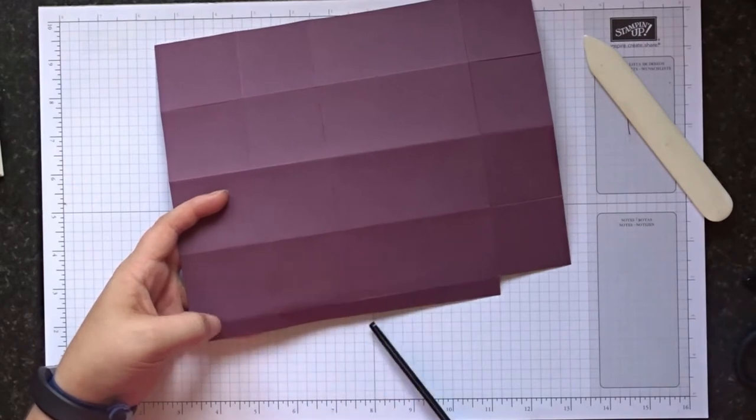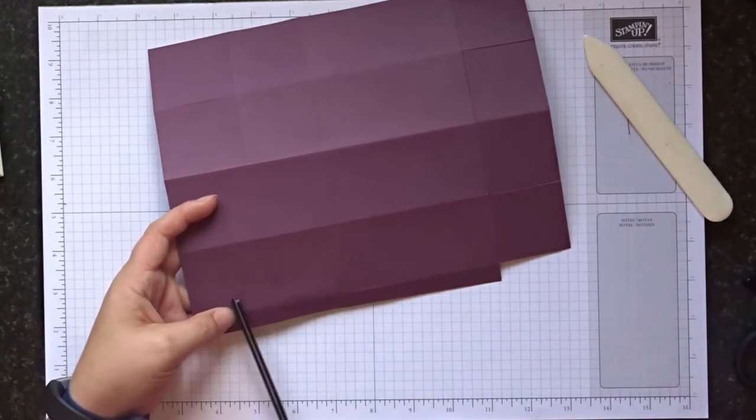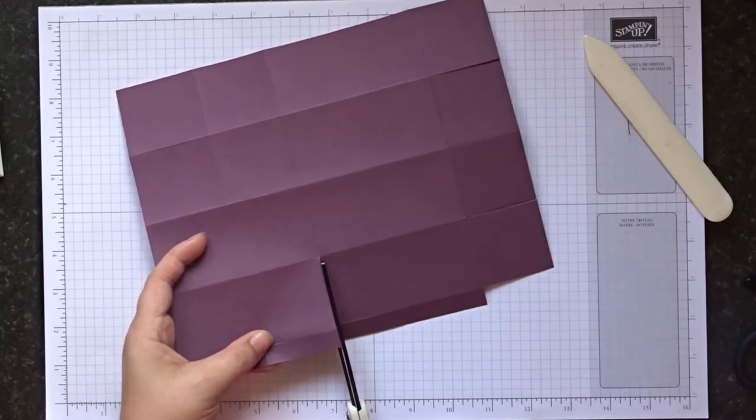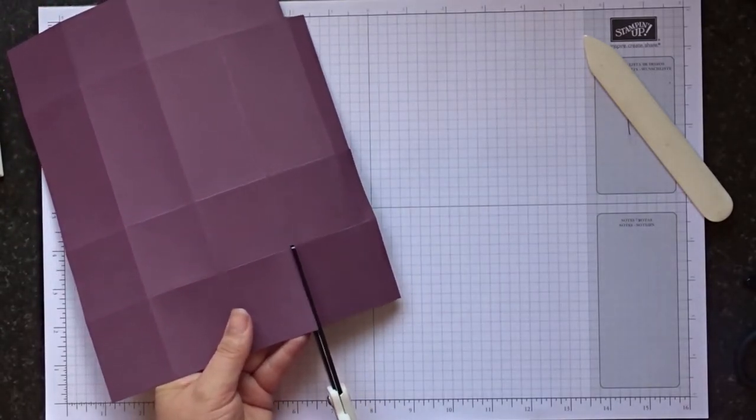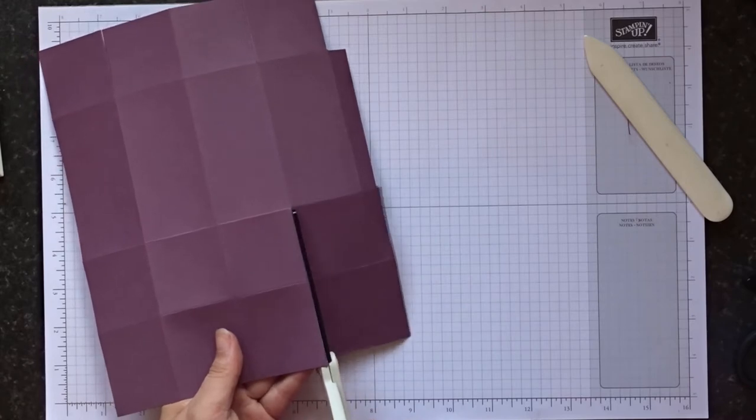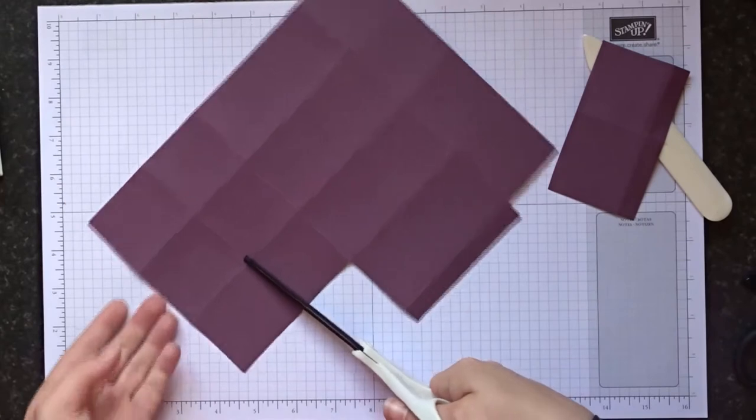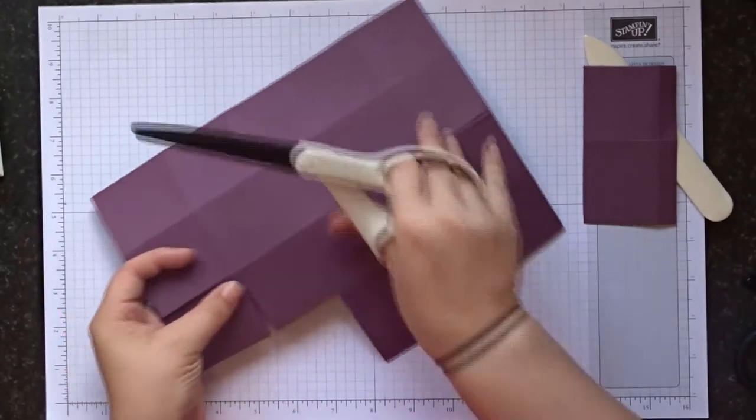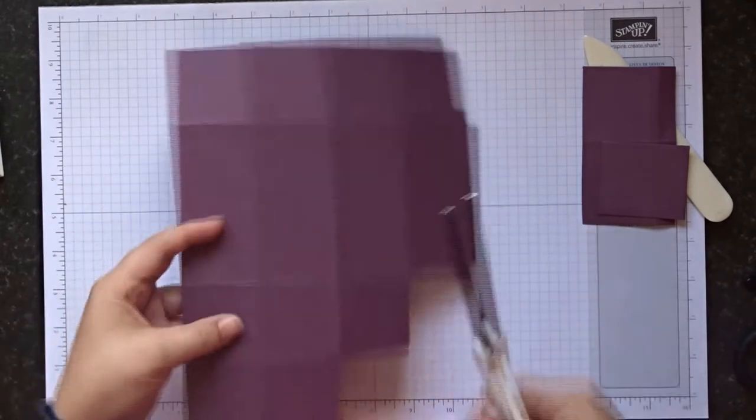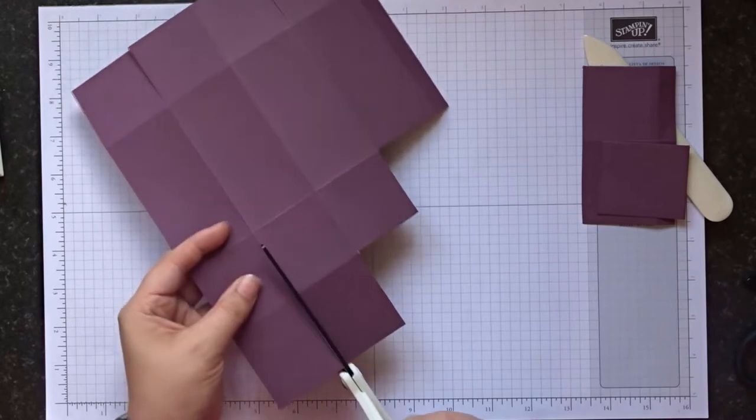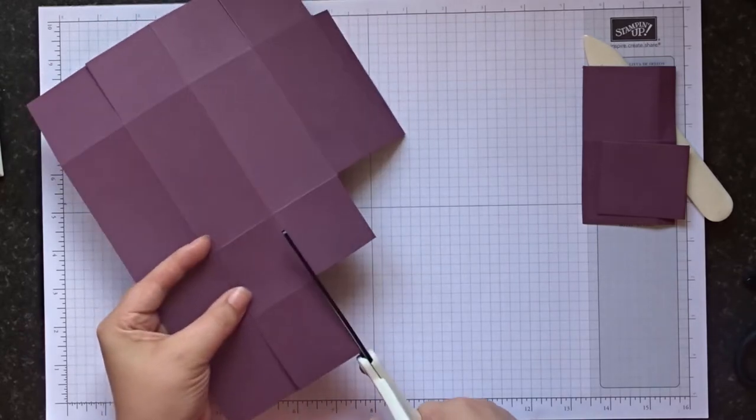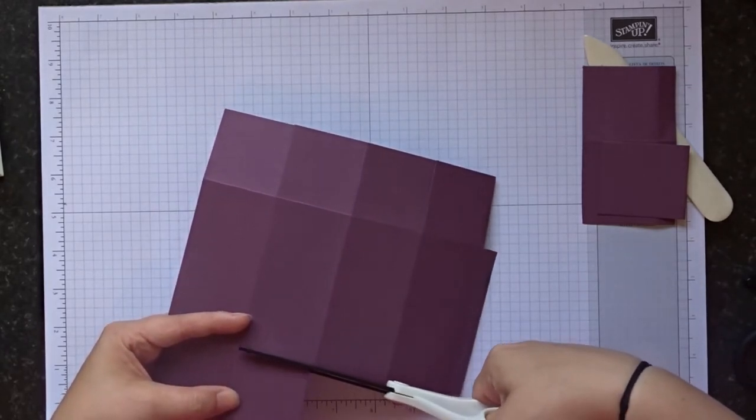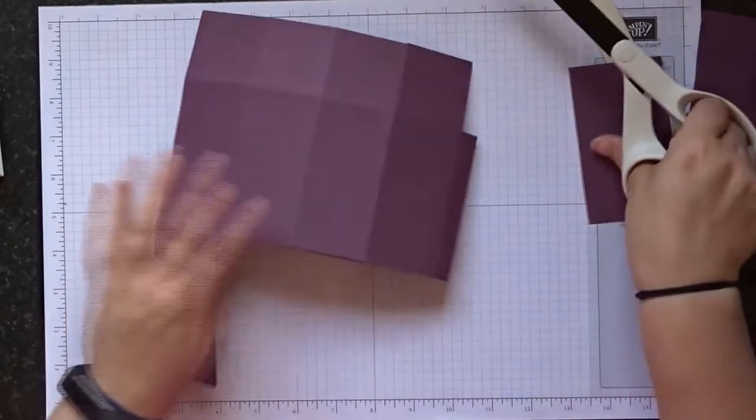So just snip up each of those, and then across the top here, we need to do a bit more cutting. So again, with the small half inch section facing you, that's the best way to do it, I've found. Now we need to cut off these top two squares on the first one and obviously the rectangle next to it. And then the next one we need to cut off the top square. Then the next one you need to cut out both of these again.